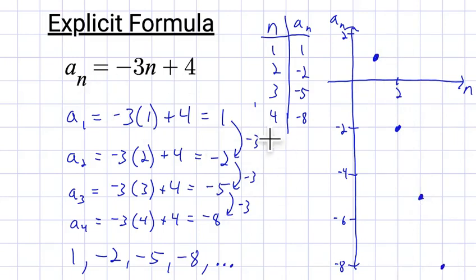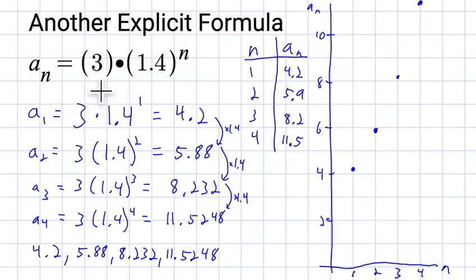Now since in this first sequence, since we were adding the same number each time, negative 3, this is an arithmetic sequence. And in the second sequence, since we were multiplying by the same number each time, this is a geometric sequence.